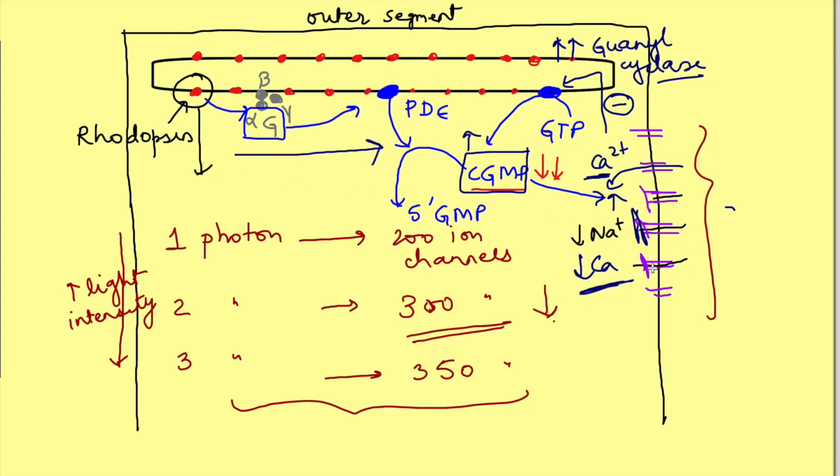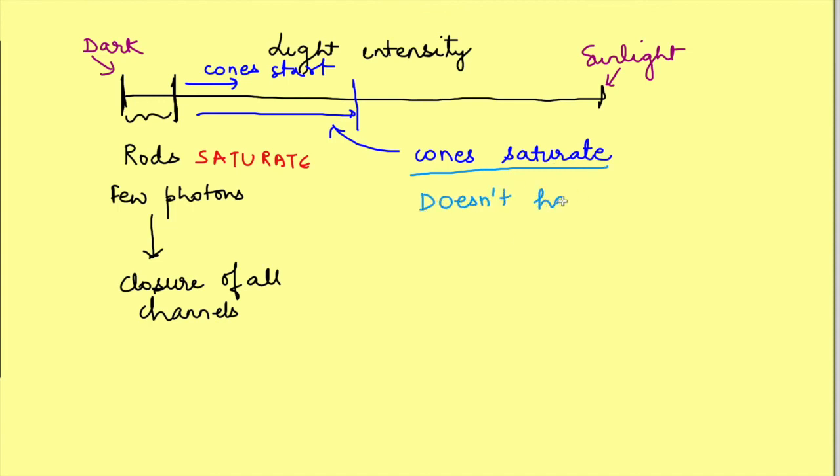So as light intensity increases, the magnitude of amplification decreases due to decrease in intracellular calcium ions. This allows us to appreciate wide ranges of light intensity. This is known as wide dynamic range. In short, we do not appreciate absolute light intensities but relative light intensities.